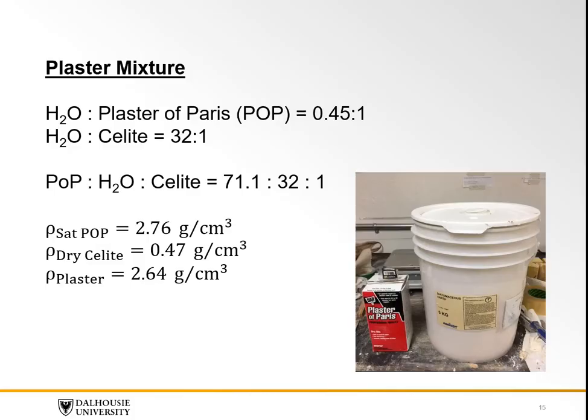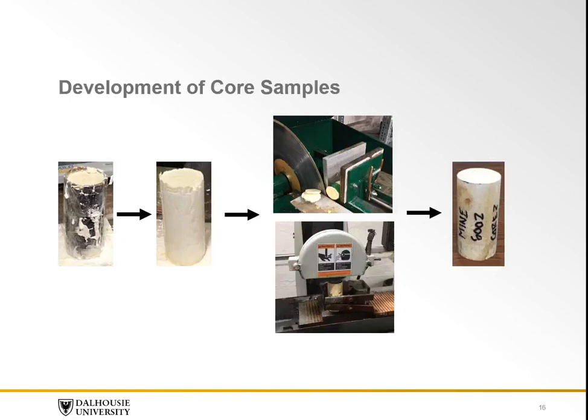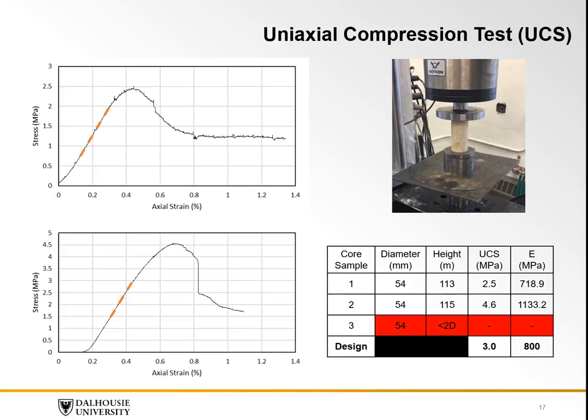The plaster used was a combination of plaster of Paris, water, and diatomaceous earth, known as celite. The ratio of the material was 71 to 32 to 1 by weight, and combined they had a density of 2.64 grams per centimeter cubed. Before the mold was created, it was important to determine the material properties of the plaster. Cores were created and prepared following ASTM standards. Three samples were created for the UCS test; however, one chipped during cutting. From the two remaining cores, it was determined the plaster had a UCS of 3 MPa and a Young's modulus of 800 MPa.